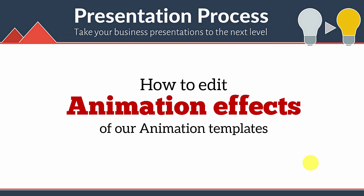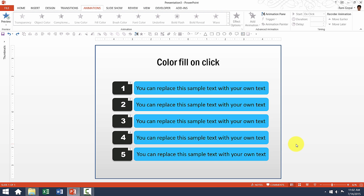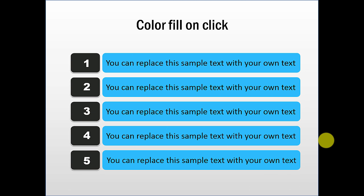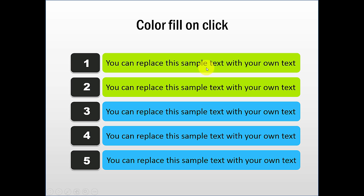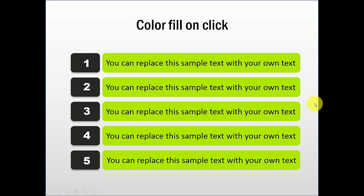Hi, in this video you will learn how to edit animation effects of our animation templates. Let us take a look at this template. In slide show mode, you can see the animation applied to the various elements. When I click, I get the blue color converted to green for each point. So it's a very simple template where on click one of the shapes is changing color — that is the animation currently in this template.